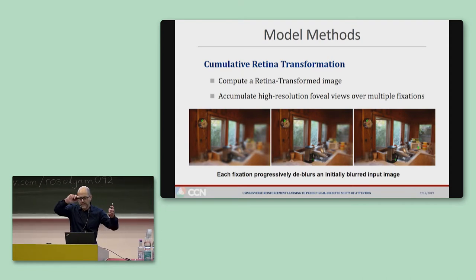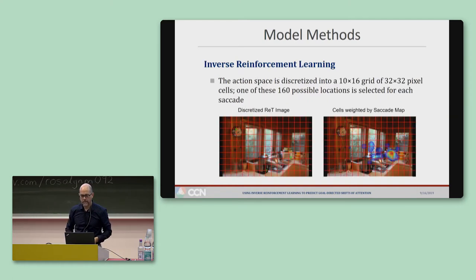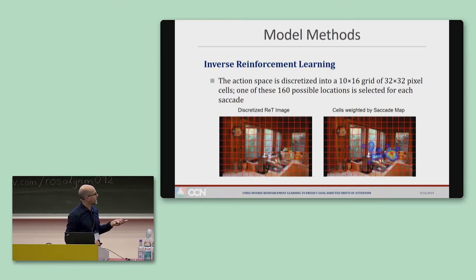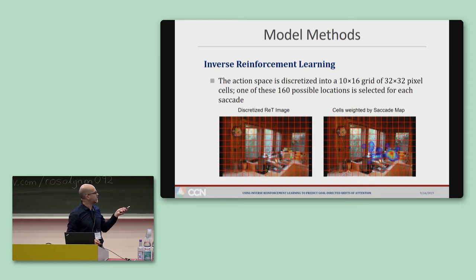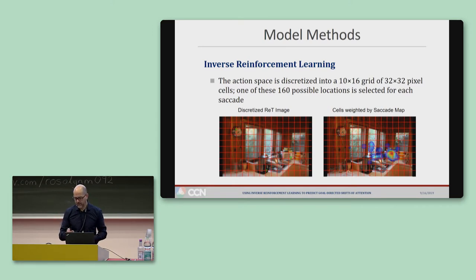As its name suggests, we accumulate these high-resolution foveal views over multiple fixations, so each fixation progressively de-blurs what is initially a pretty blurred image. To define the action space, we discretize the retina image input into a grid of cells, which are then prioritized by the saccade map to select one of 160 possible locations for the saccade.